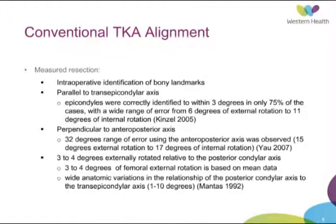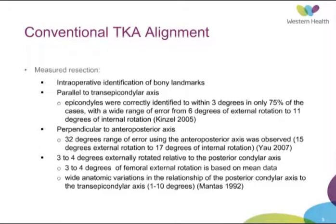The posterior condylar axis technique uses 3 to 4 degrees of external rotation from that axis. Unfortunately, there are also wide anatomical variations of between 1 to 10 degrees compared to the trans-epicondylar axis. So you might be moving 3 to 4 degrees into external rotation on your jig, but still have the knee in internal rotation if there is up to 10 degrees of variation. This shows that alignment might be off in a conventional knee replacement.